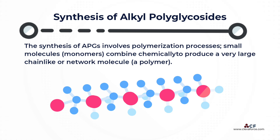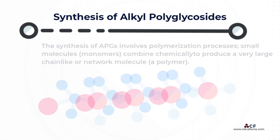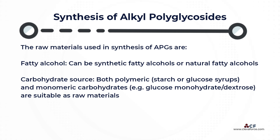The raw materials used in synthesis of APG are: fatty alcohol, which can be obtained either from petrochemical sources as synthetic fatty alcohols, or from natural, renewable resources such as fats and oils, as natural fatty alcohols.